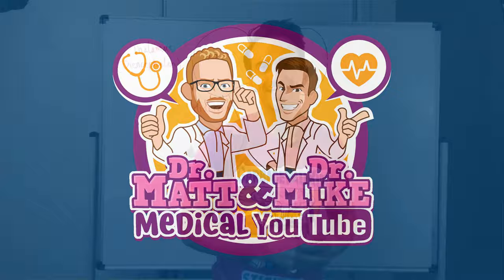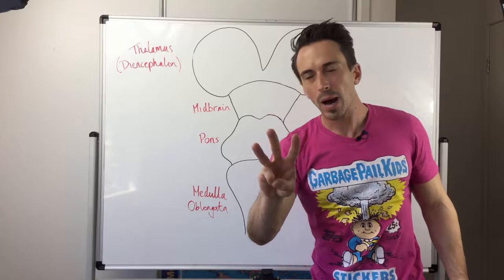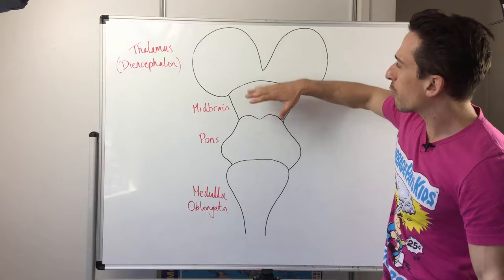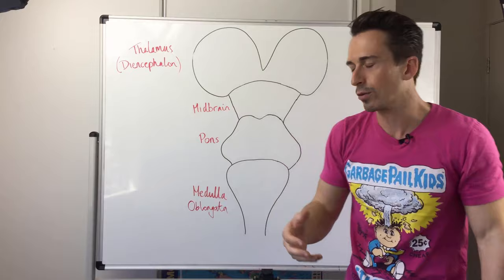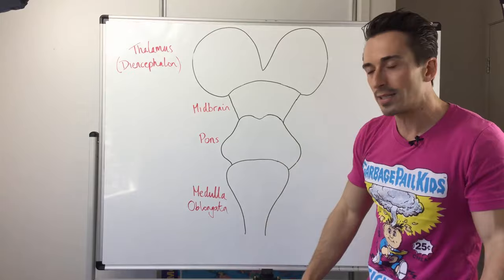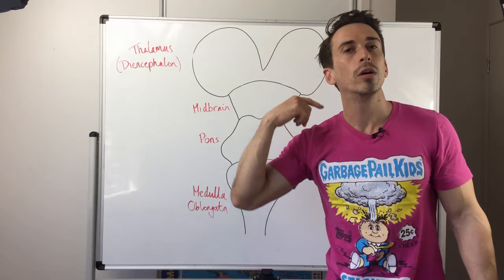To begin, the brain stem is made up of three parts: the midbrain, the pons, and the medulla. Above the brain stem sits the cerebrum. If I were to take off the two cerebral hemispheres, we're left with the diencephalon — basically the thalamus, hypothalamus, and pineal gland. Underneath that is the brain stem, and underneath the medulla oblongata we have the first part of the spinal cord, the cervical aspect.